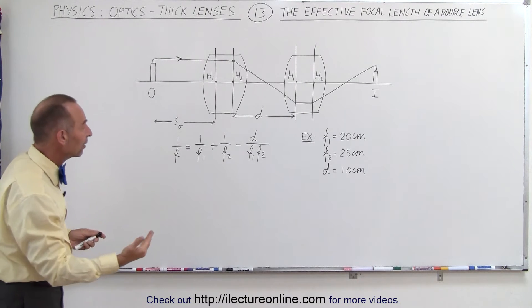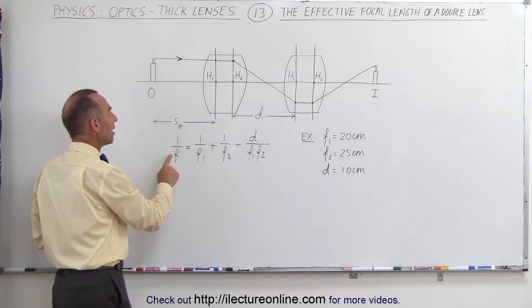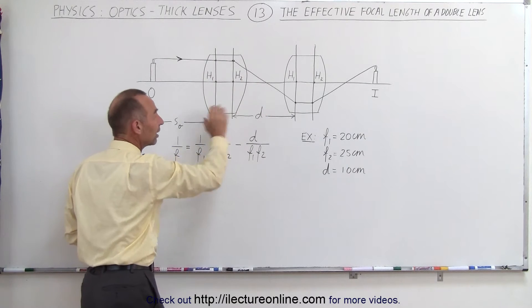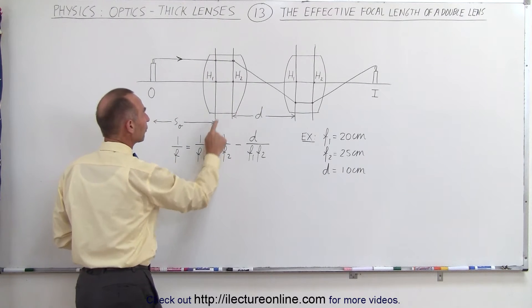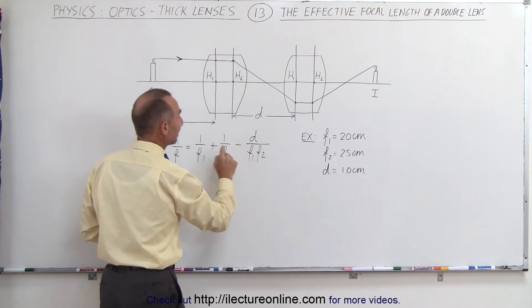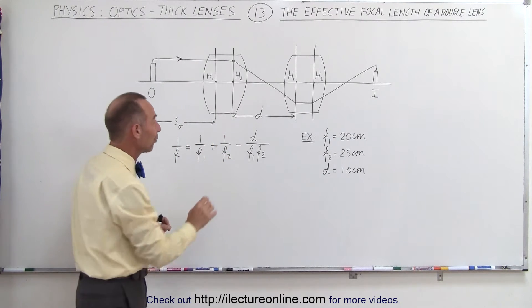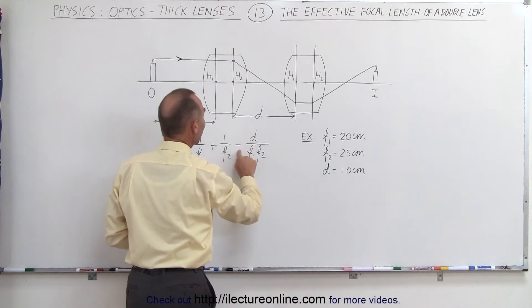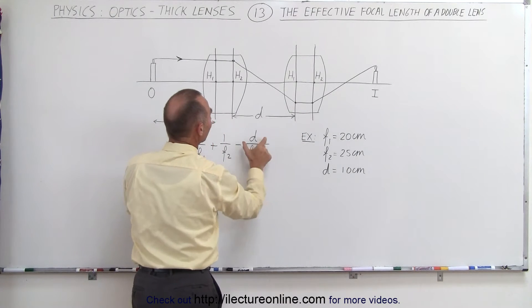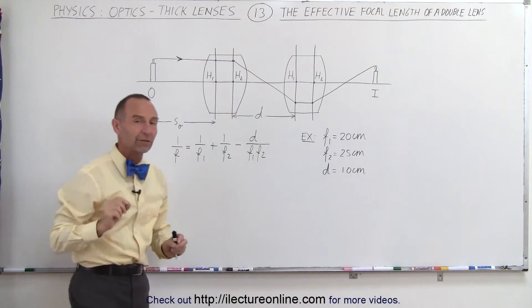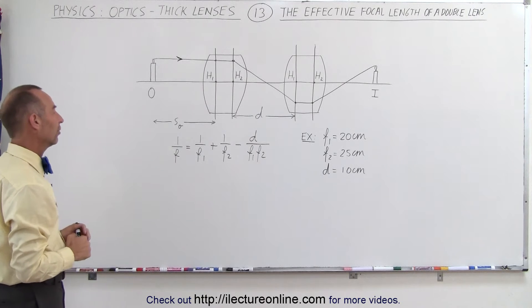But the equation nevertheless reads that 1 over the effective focal length of both lenses combined equals 1 over the focal length of the first lens plus 1 over the effective focal length of the second lens minus the distance between them divided by the product of the two effective focal lengths of the two lenses.